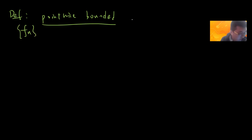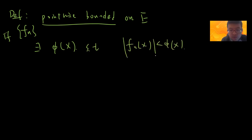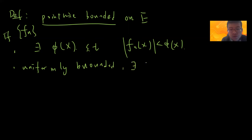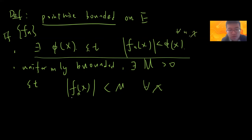Pointwise bounded means: if f_n is pointwise bounded on E, there exists a function φ(x) finite, such that |f_n(x)| < φ(x) for all n and x. This is called pointwise bounded. We say the sequence is uniformly bounded if there exists M > 0 such that |f_n(x)| < M for all x and all n. So this means the sequence is bounded by a constant M for all n and x — this is called uniformly bounded.